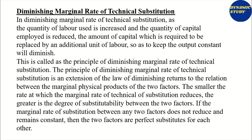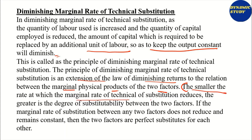Diminishing marginal rate of technical substitution means that as the quantity of labor used is increased and the quantity of capital employed is reduced, the amount of capital which needs to be replaced by an additional unit of labor, so as to keep output constant, will diminish. This is called the principle of diminishing marginal rate of technical substitution, and it is basically an extension of the law of diminishing returns to the relation between the marginal physical products of the two factors.